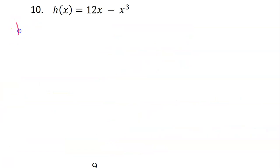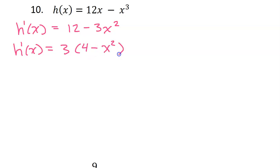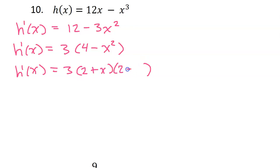Let's do the same thing for number 10. Start by finding the derivative, h prime. The derivative of 12x is just 12, and then the derivative of x to the third power is 3x squared. So we have the derivative. We will need the critical numbers, and those will be easier to find if we write this derivative in factored form. I'm noticing that we have a common factor of 3, so let's take 3 outside the parentheses, and that will leave 4 minus x squared. Now I'm noticing that we have the difference of 2 squares.